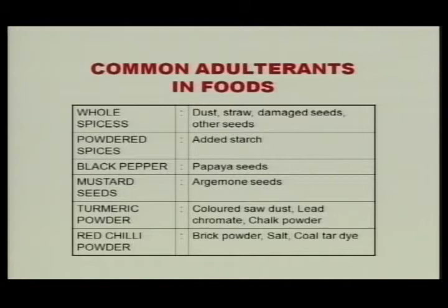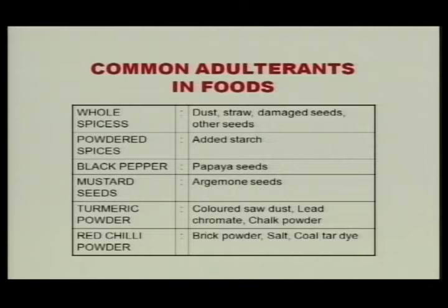In red chili powder, brick powder, salt, and coal tar dye are added. In tea leaves, exhausted tea, coloring matter, sawdust, and iron fillings are added. In coffee, chicory is added — it is a cheaper quality ingredient. Chicory is permitted to a certain extent but it should be declared on the label of instant coffee. Tamarind seeds and dead seeds are also added in coffee powder.